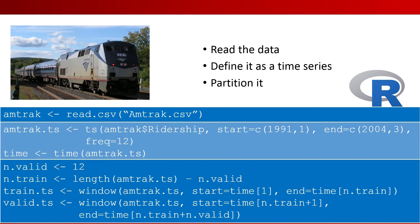The next two lines define the validation and training period lengths. Finally, the last two lines create the two partitions into training and into validation. Notice that for roll forward partitioning, we can create a loop and modify n.train in that loop. This code is just one possible way for performing partitioning in R — there are other ways to achieve the same thing, so feel free to experiment with different methods.